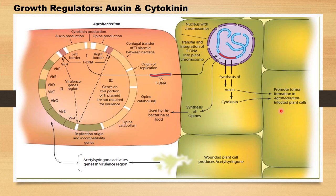This disturbs the physiology of the plant. The diseased plant cell produces not only auxin and cytokinin but also opines, which are consumed by the bacterium without it entering the host cell. The disease produced by Agrobacterium is known as crown gall, caused through the overproduction of growth regulators auxin and cytokinin.